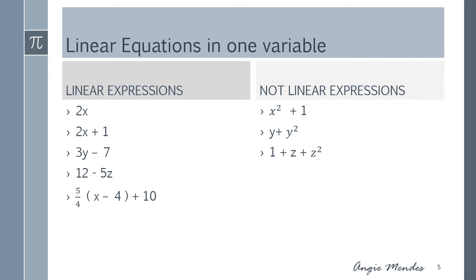Here are a few examples of linear expressions: 2x, 2x plus 1, 3y minus 7, 12 minus 5z, and 5 upon 4 multiplied by x minus 4 plus 10. Pay attention to the variables x, y, and z — in all cases the variable is raised to the power of 1.